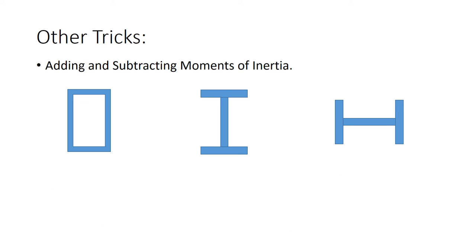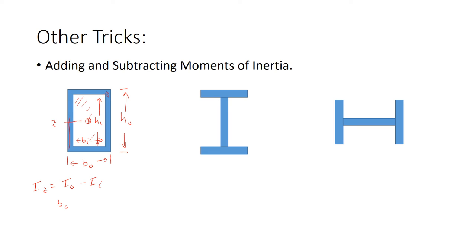Let's look at a couple other shapes. For a box beam, if the outside dimensions are bo and ho, and the inside dimensions are bi and hi, the moment of inertia about the z-axis is the outside minus the inside: Iz = bo·ho³/12 − bi·hi³/12.